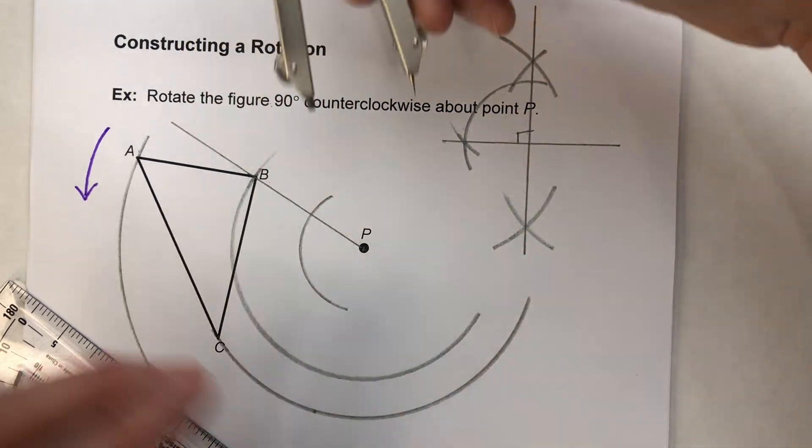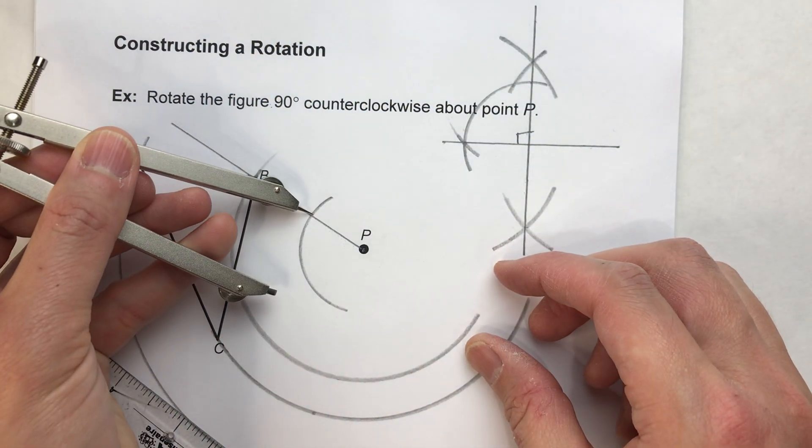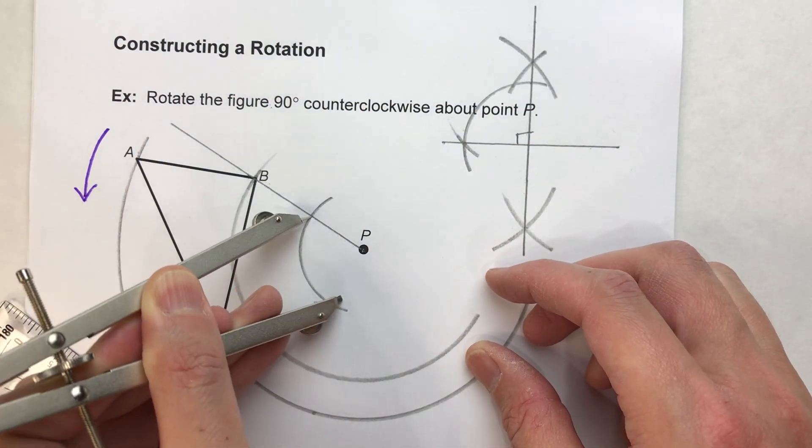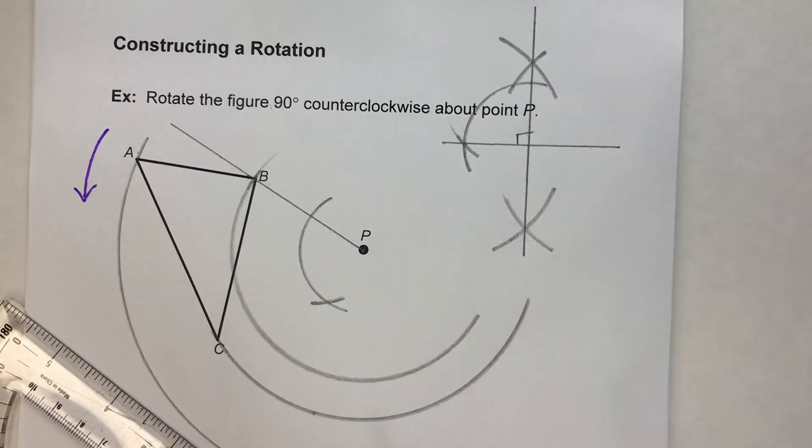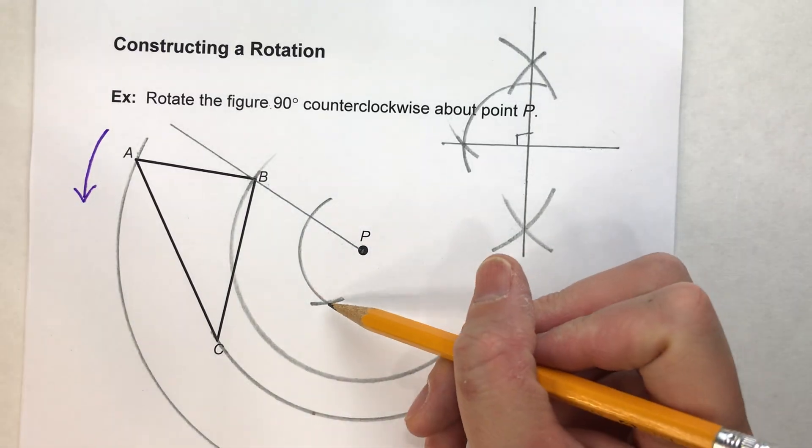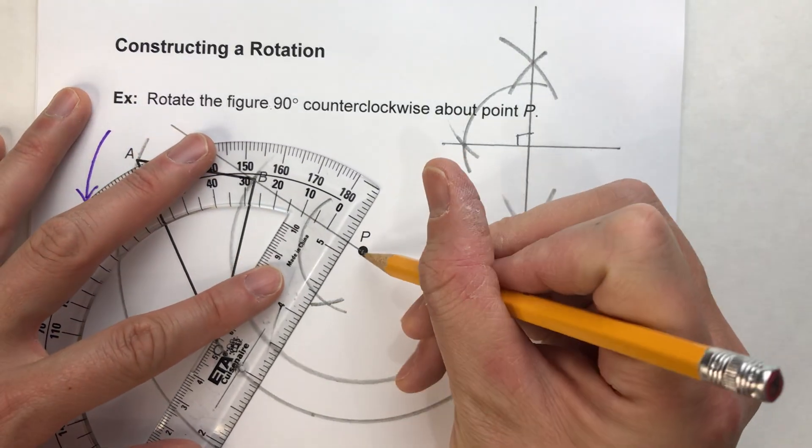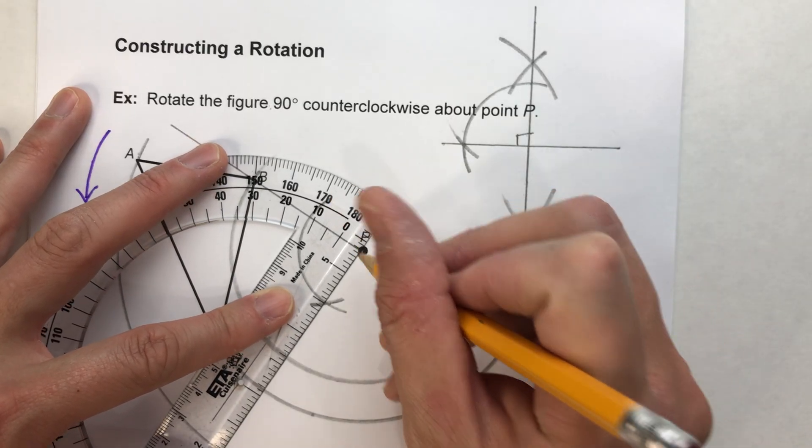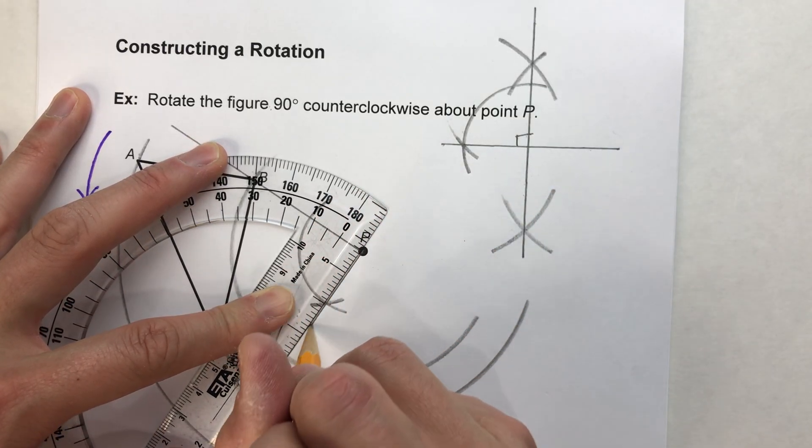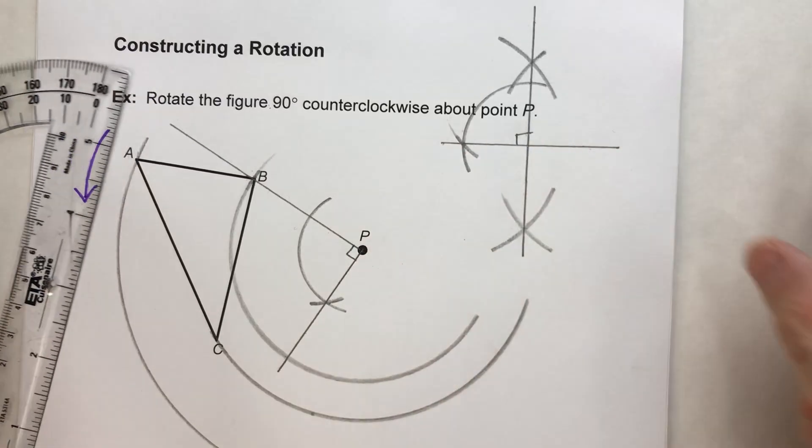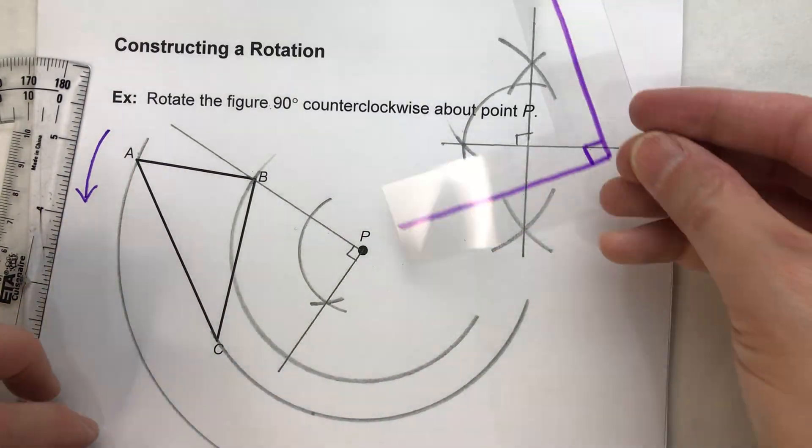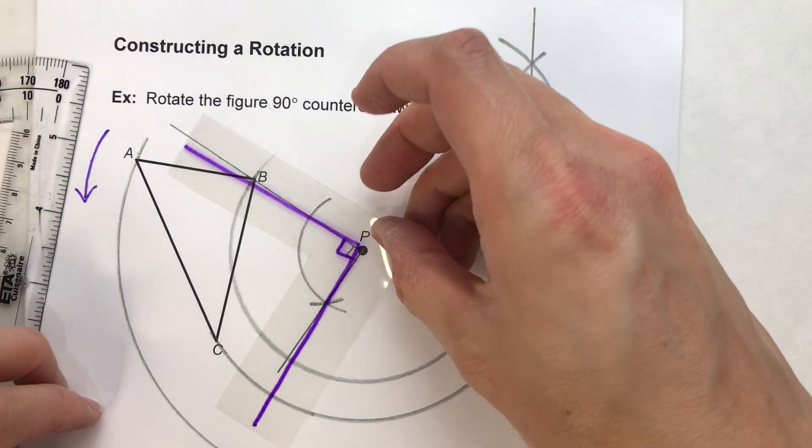And then I'm going to repeat it off of where I'm duplicating the angle. Right there. And where those two arcs intersect, that's going to be my right angle, my duplicated right angle. There we go. So I just duplicated this angle right here.